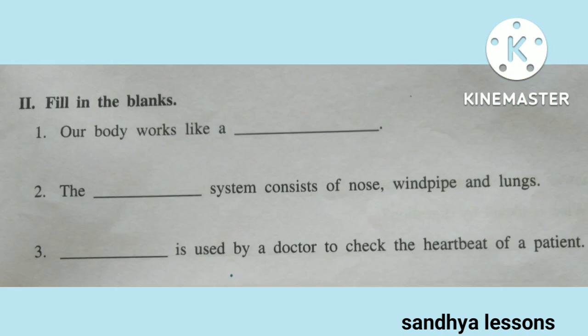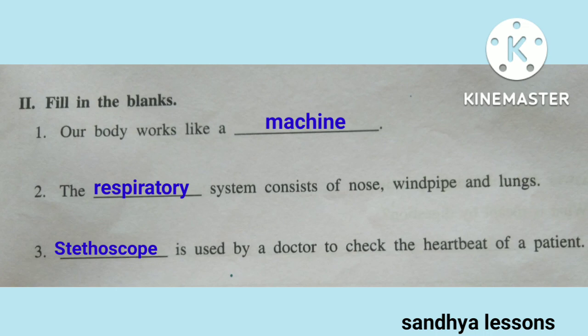Second, fill in the blanks. Our body works like a machine. The respiratory system consists of the nose, windpipe, and lungs. Stethoscope is used by a doctor to check the heartbeat of a patient.